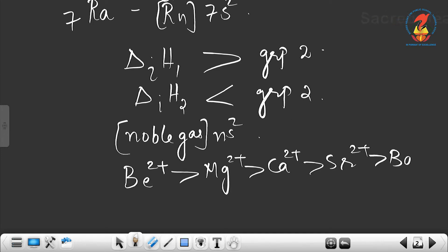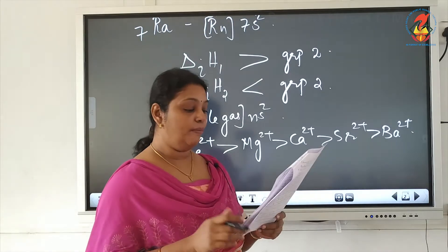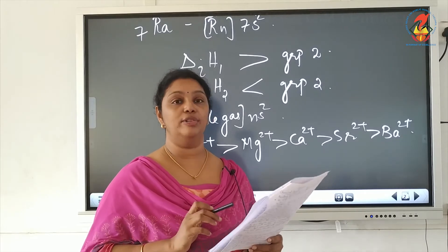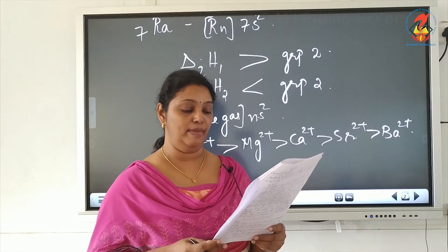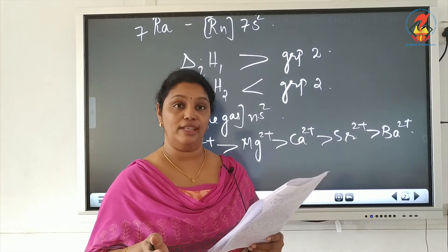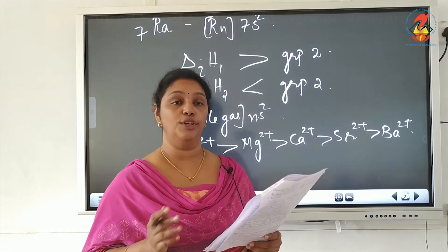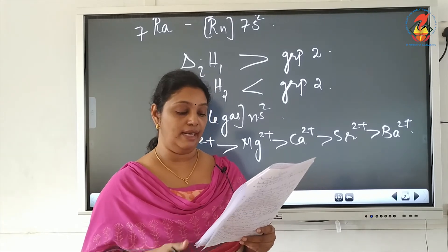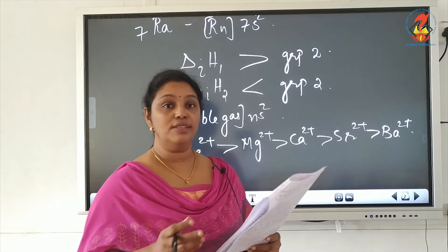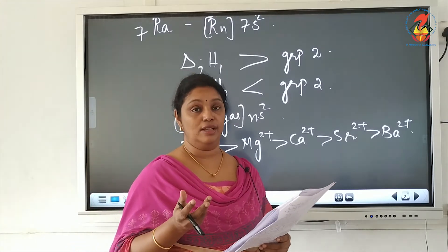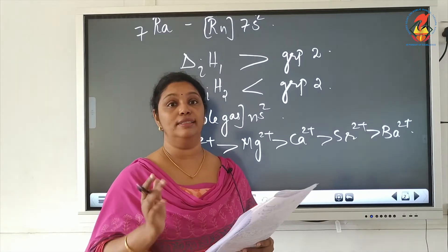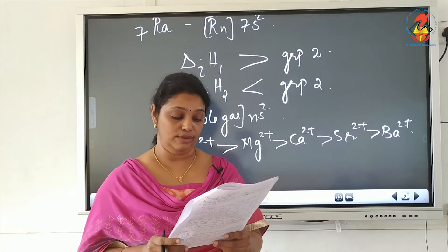The order continues: Sr²⁺ > Ba²⁺. The compounds of group 2 are more extensively hydrated than group 1 elements because the hydration enthalpy of group 2 elements is larger than group 1 metal ions, since the size of group 2 metal ions is smaller than group 1 metal ions.